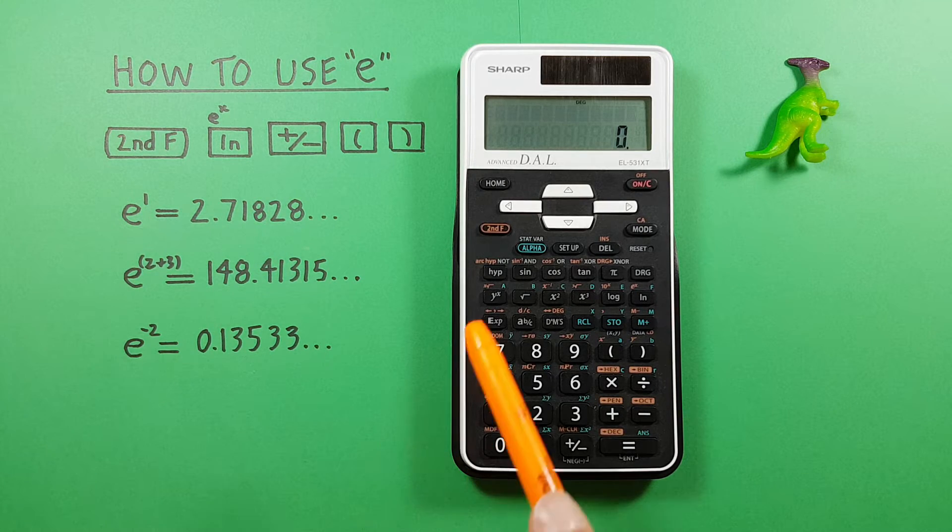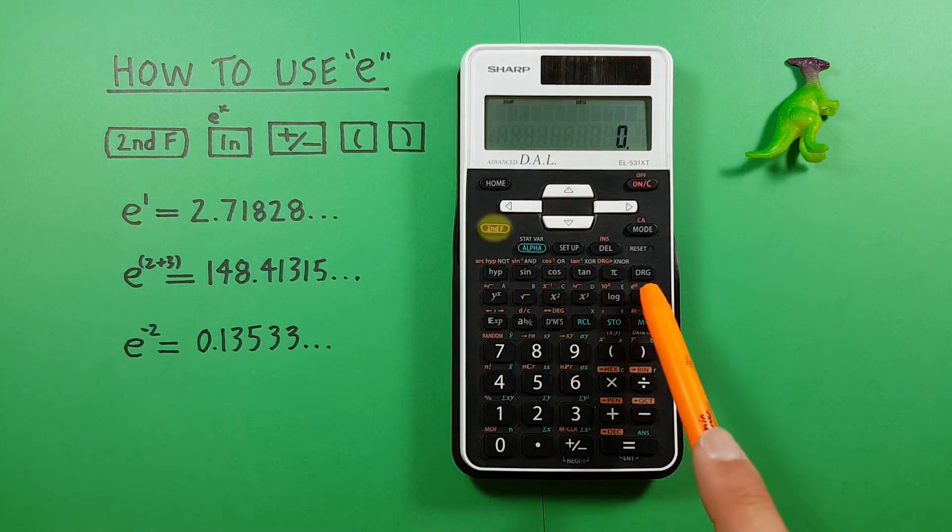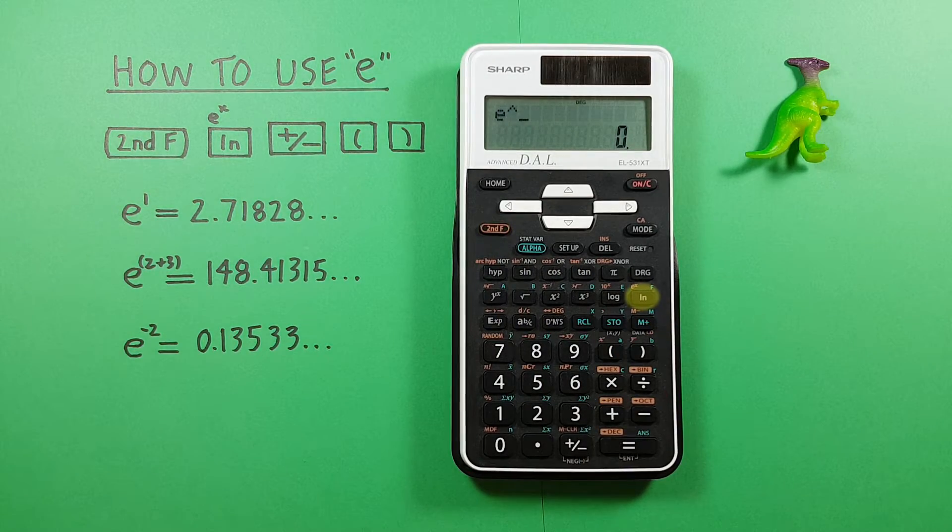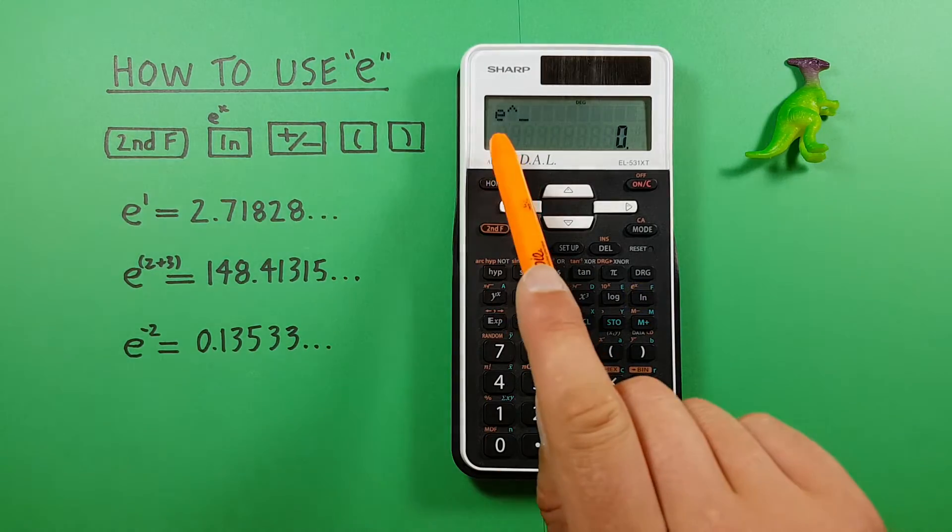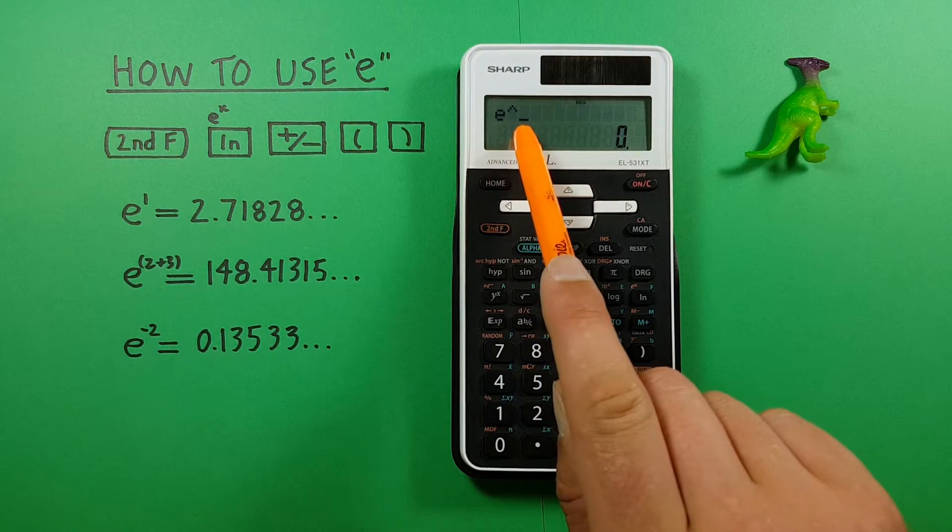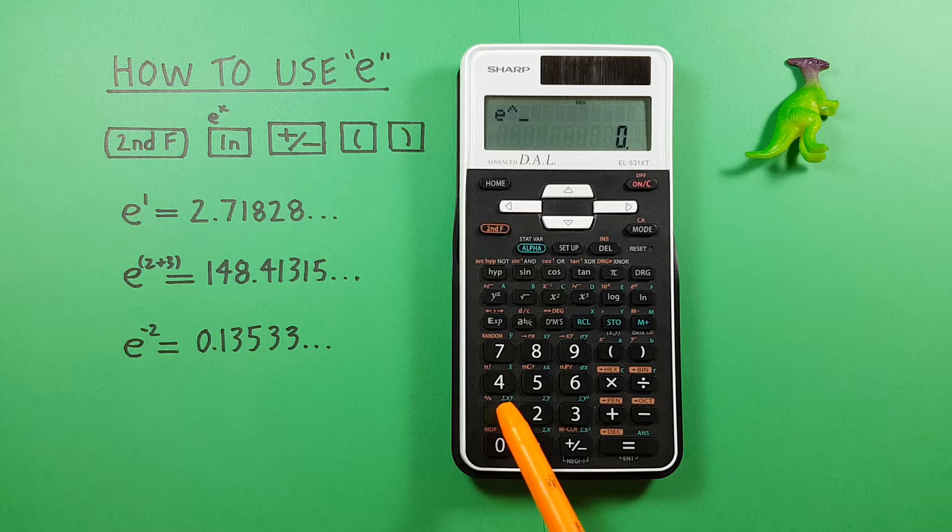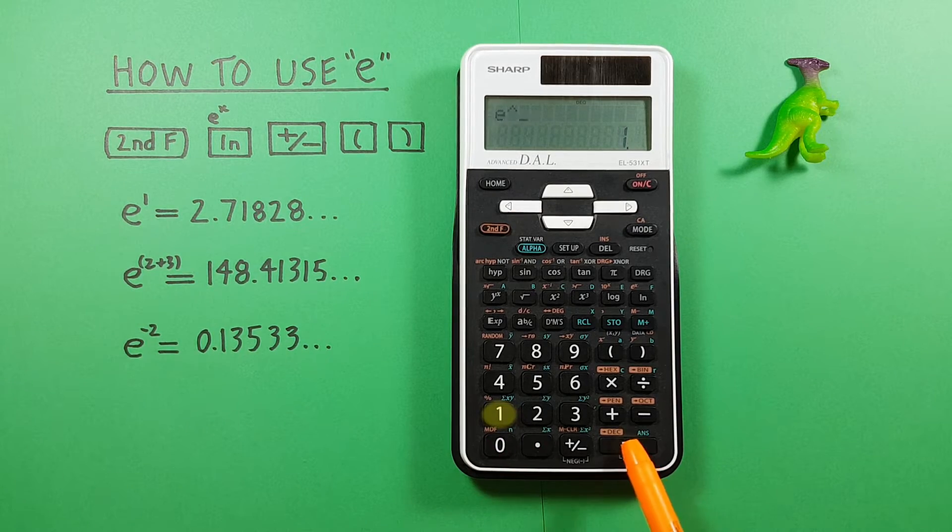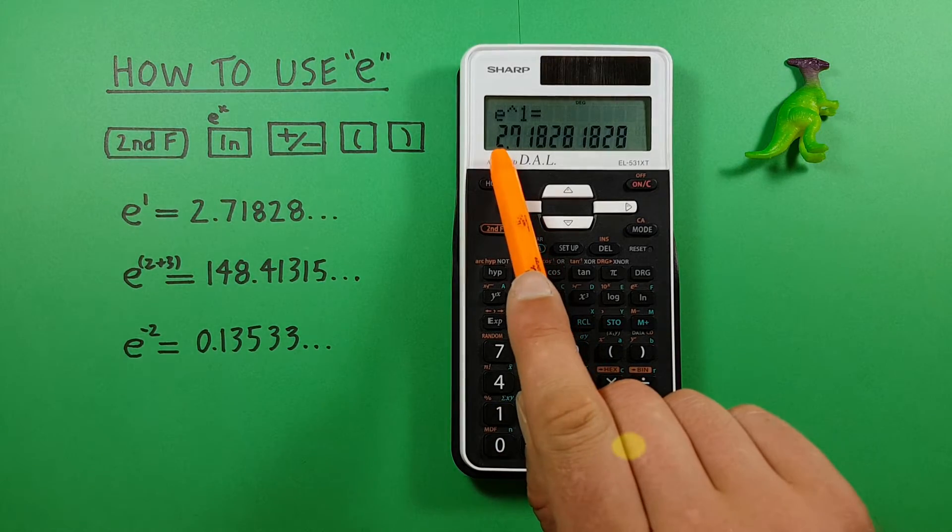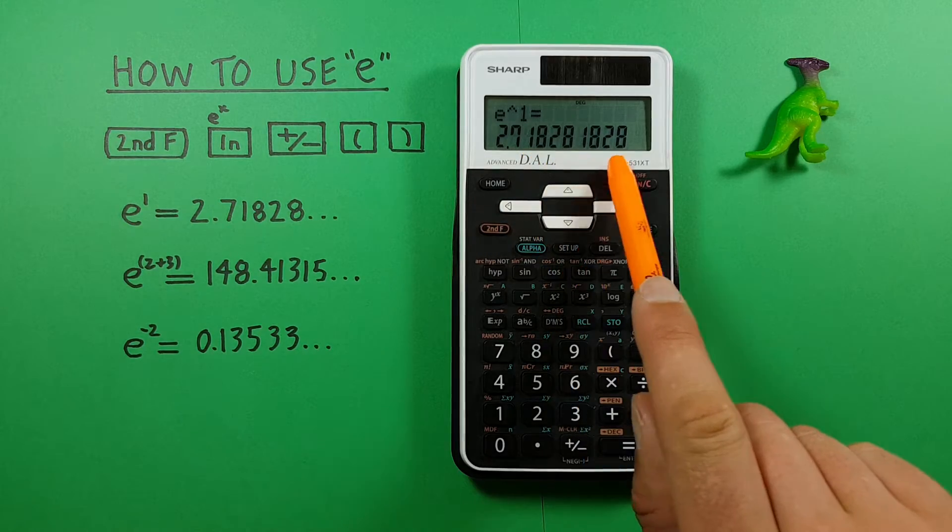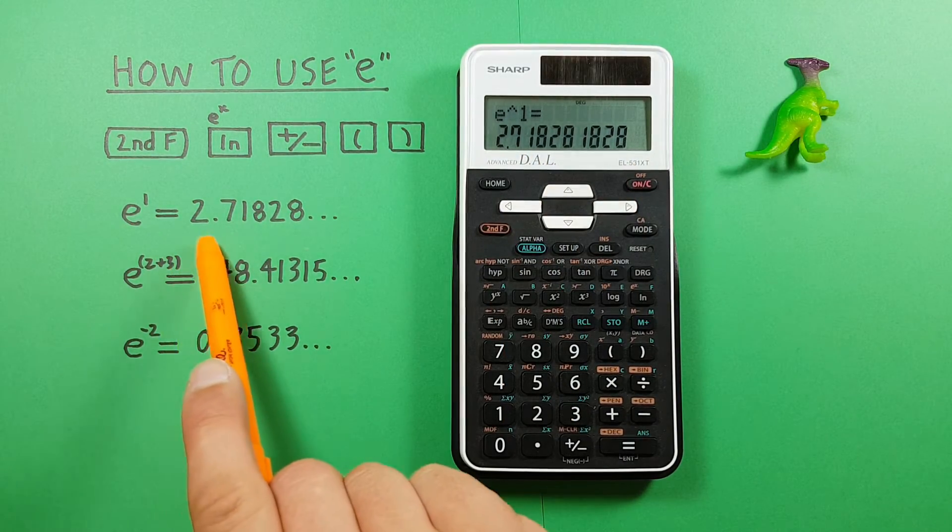To do this we press second function and then the ln key. We now see e with an exponent sign there. If we enter 1 and then press equals, we see we get a result of 2.71828 etc. or the e constant.